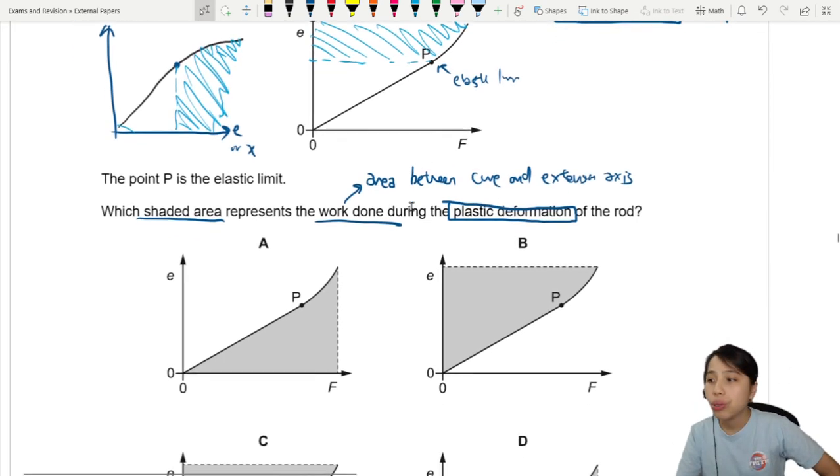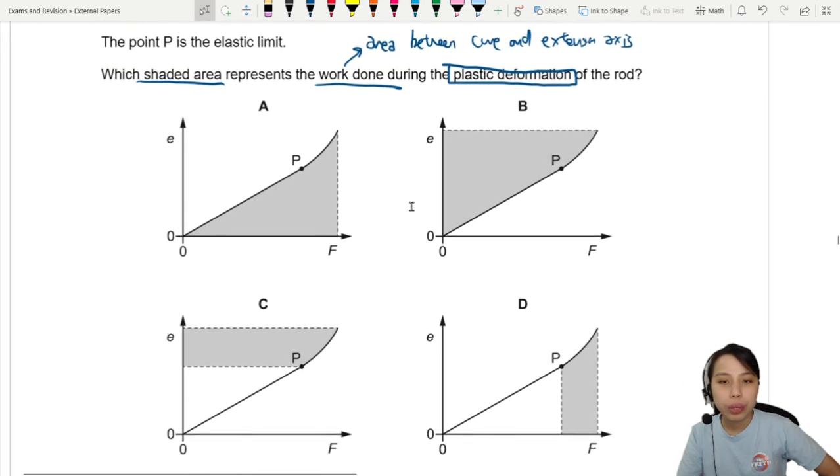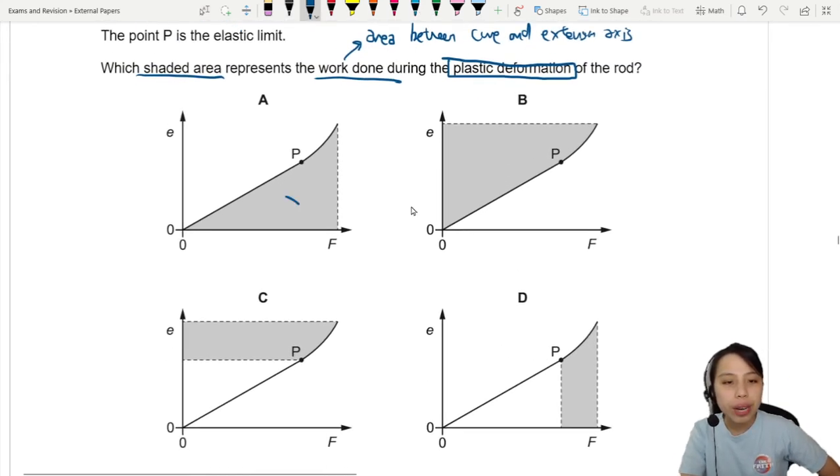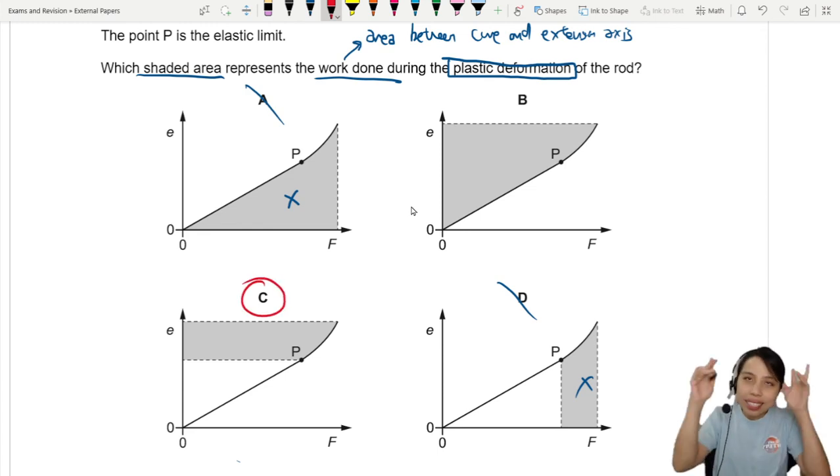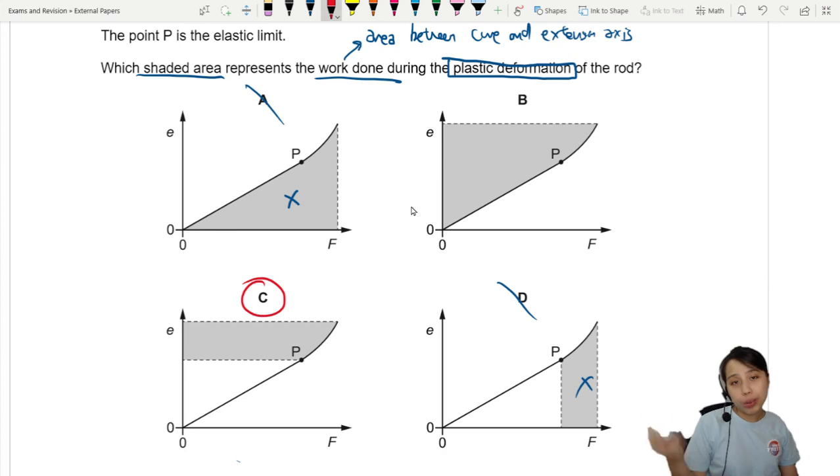So we just go and scroll down and see which one suits best. So this one, wrong area. This is also wrong area. Straight away, you can throw away. C would be the best choice because it is under the correct area of the graph with respect to extension, and it is only looking at the plastic deformation part of it.